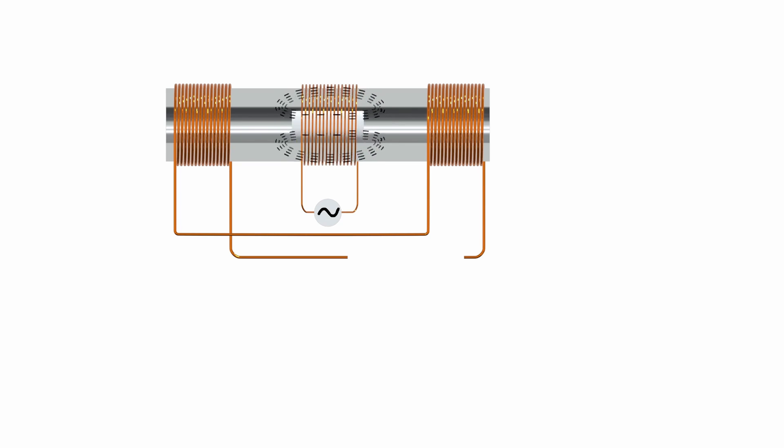Inside the hollow cylinder, a movable soft iron core is positioned. The position of this core in relation to the secondary coils affects the magnetic coupling between the primary and secondary coils.